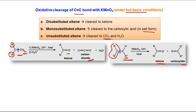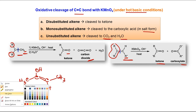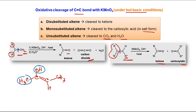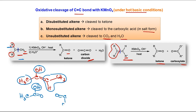So remember these rules: disubstituted alkene carbon is cleaved to ketone, monosubstituted gives carboxylic acid in salt form, and unsubstituted terminal CH2 is cleaved to CO2 and H2O. Now consider the preferred enol structure. The left-hand carbon is disubstituted, so by the disubstituted rule it would be cleaved to a ketone — but since the R group here is OH, we get carboxylic acid. The monosubstituted side also gives carboxylate, which after acidification is acetic acid.